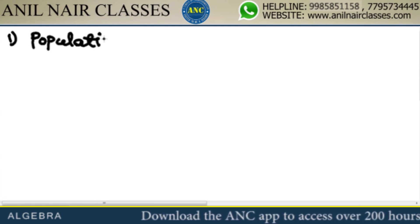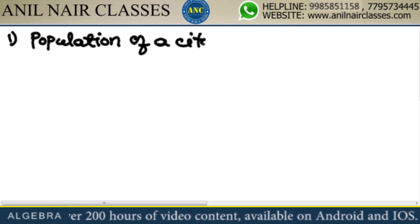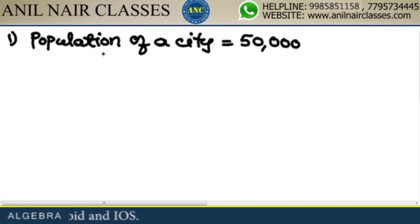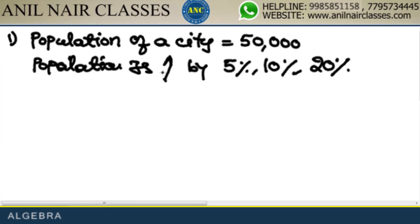Please write down this question. Population of a city is 50,000. The population is increased by 5%, 10%, and 20% in successive years. What is the population after 3 years? Please take a note — this is an SSC question.